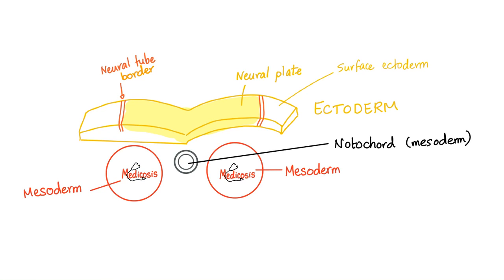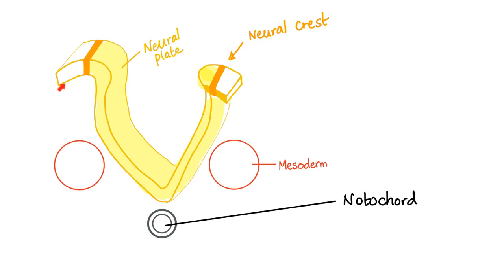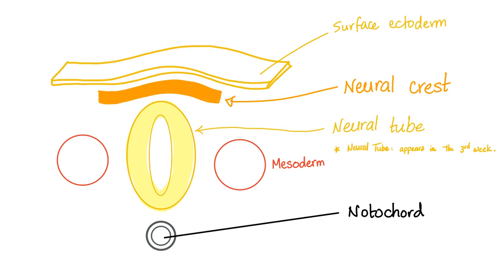Here is another example of cell migration and differentiation. Look at the ectoderm — it will invaginate inwards like this, and then continue to make a cylinder. That cylinder is the neural tube — hashtag central nervous system. Just next to it is the neural crest — hashtag peripheral nervous system.